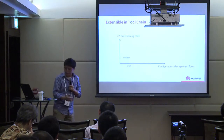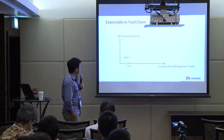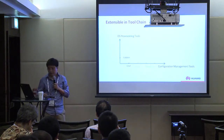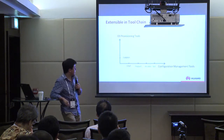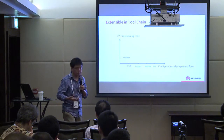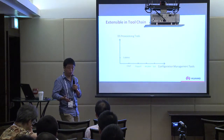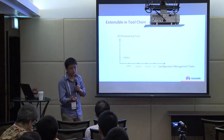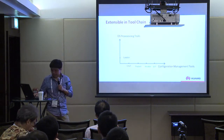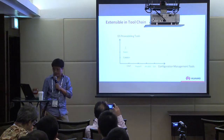Another extensibility dimension is the toolchain. At this moment we support Chef and use Cobbler as our OS provisioning tool. We see other tools in the market, and especially in enterprise scenarios where you've already committed to a particular toolset, we shouldn't require users to switch their toolset just because they chose Compass. The same applies to OS provisioning — there are lots of alternatives there.